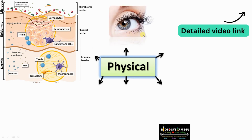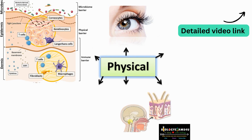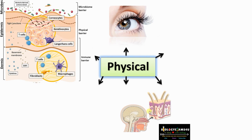In regions where there is no skin, such as the eyes, mechanisms like eyelashes and eyelids protect the eyes from microorganisms and dust reaching the internal surface. The same is the case with the nose — nasal hairs along with mucus trap microorganisms and dust, thus preventing injury.